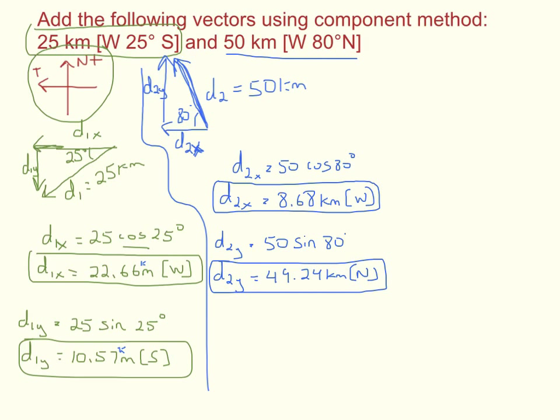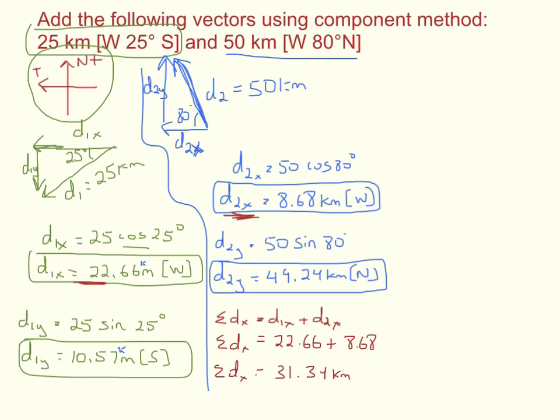Once we've got our x and y components, that's usually what I call step one. Step two is, let's add the x and y components. So, I'll go down right under here, and I'm going to say the sum of displacement in the x direction. That's just D1x plus D2x. So, we're going to add this component and this component over here. They're both in the west direction. Remember, way back up at the top here, we said that west was positive. So, both of those numbers can go in as positives. So, this is 22.66 kilometers and 8.68 kilometers. That is sum of D in the x direction. So, in total, sum of D in the x direction then, 31.34 kilometers. And, that's west.